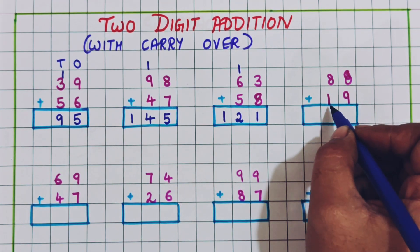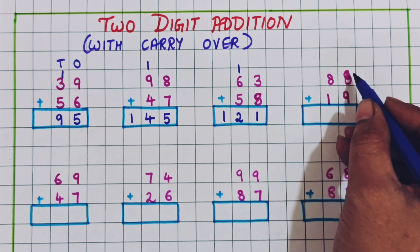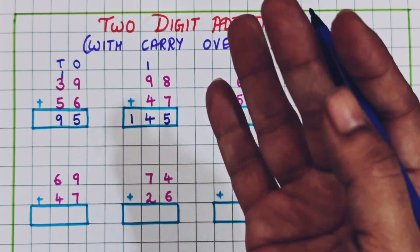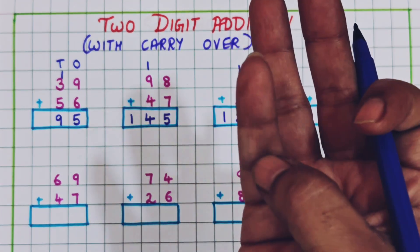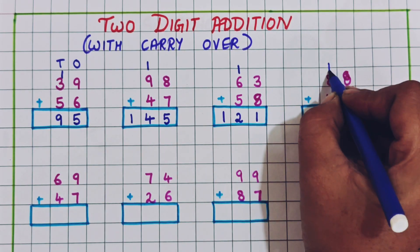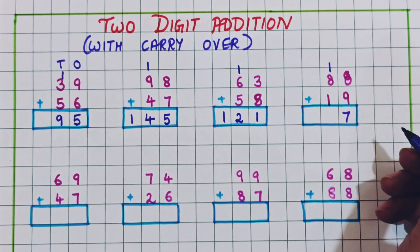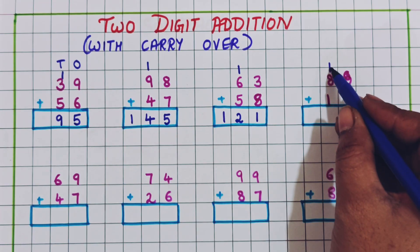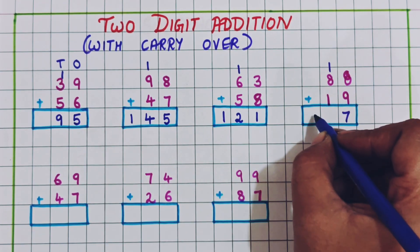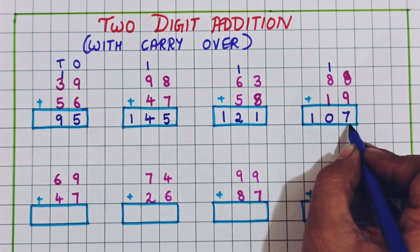Now 88 plus 19. I will keep 9 in my mind and add 8 to it: 10, 11, 12, 13, 14, 15, 16, 17. So I will write 1 as a carryover and 7 at the bottom. Now 8 plus 1 is 9, and 9 plus 1 is 10. So the answer is 107.